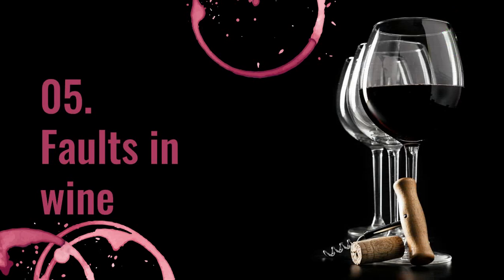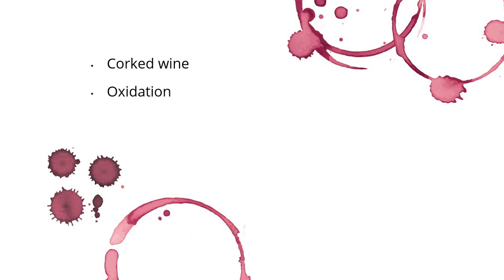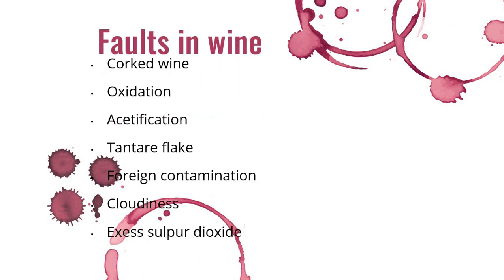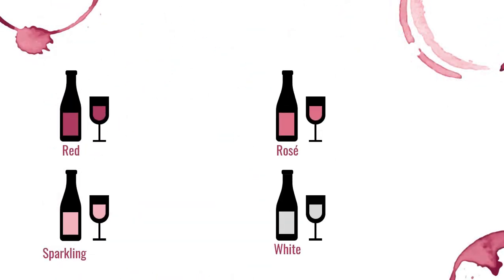On learning outcome five, we talk about faults in wines. Some wines have faults — they may have been corked badly — which can be harmful to the guest. The faults include: corked wine, oxidation, acidification, tartrate flakes, foreign contamination (meaning there is something inside the wine), cloudiness, and excess sulfur dioxide.